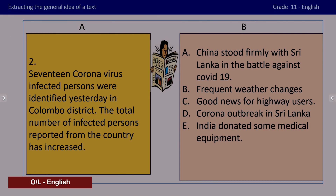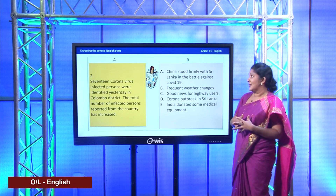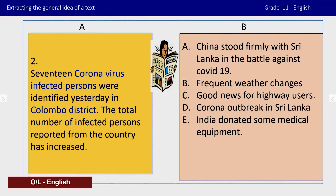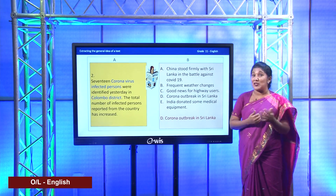I also see something in the Colombo district. So now you know this must be something related to coronavirus. Let us see whether we have a suitable headline to match that text. Did these words take your attention - the highlighted phrases? I said: 17, coronavirus, infected persons, and Colombo district. I am sure that most of you have guessed the correct answer: 'Corona outbreak in Sri Lanka.' Now you have confidence to move on to the next text.